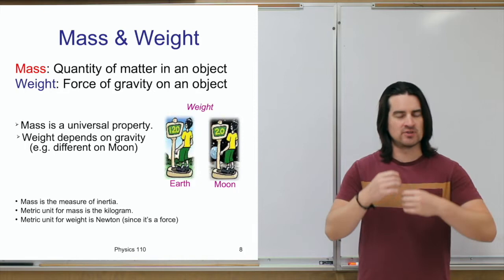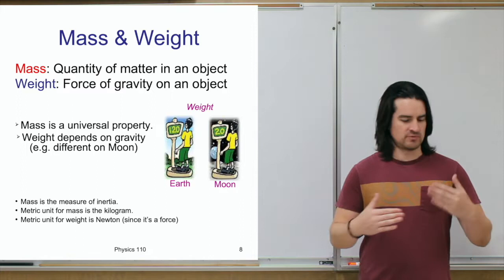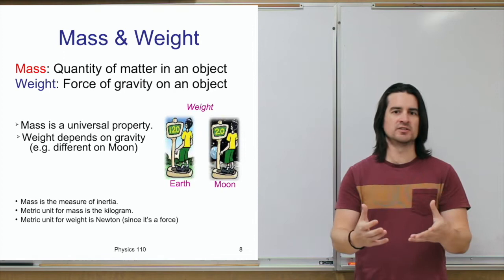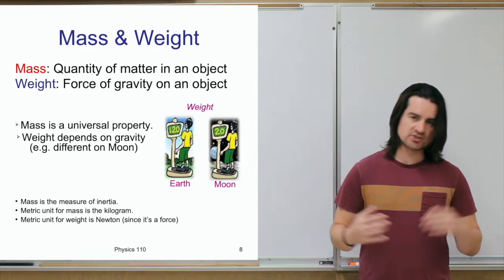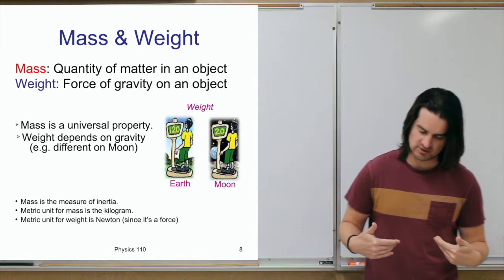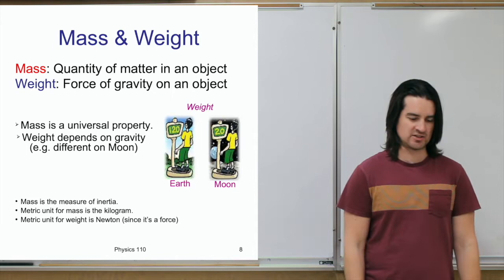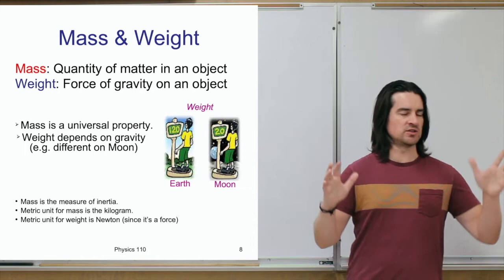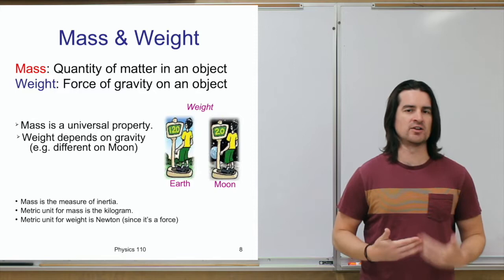Our weight is actually a measure of the force of gravity pulling us down. Here on Earth, at the surface, the earth pulls me down with a certain force, resulting in an acceleration of about 10 meters per second squared. There's also a support force pushing back up from the floor. Your weight is really the experience of gravity pulling you down and the floor pushing you back up — weight is essentially a measure of just the force of gravity on an object.